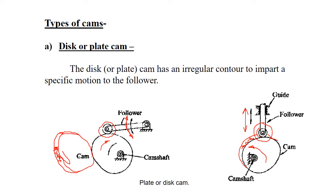The disc surface of the cam provides a resting surface for the roller, and that is why this type is called a disc cam.